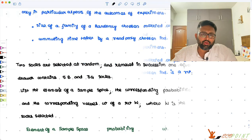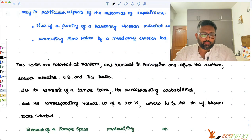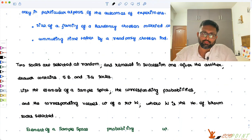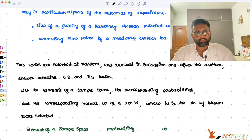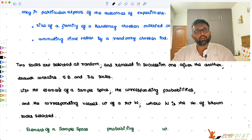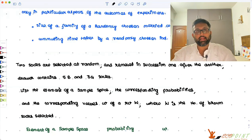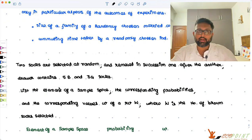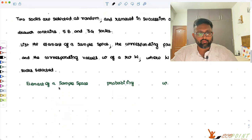Let's look at one very simple example. There are two socks which are selected at random, and in a drawer there are five brown socks and three green socks. You pick up these socks one after another. You have to list the elements of a sample space, the corresponding probabilities, and the corresponding values of small w of a random variable capital W, where capital W is the number of brown socks which are selected. That's a random variable.